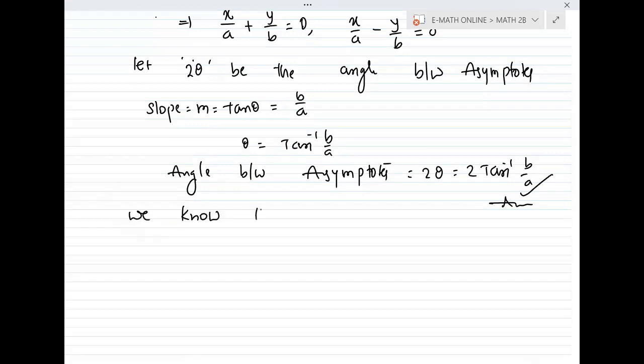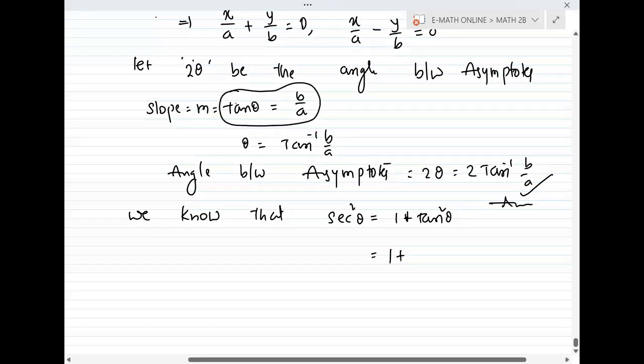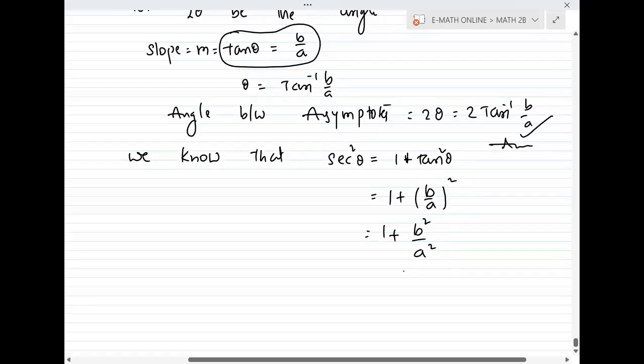We know from trigonometry that secant square θ equals 1 plus tan square θ. That equals 1 plus (b/a) whole square, which equals (a square plus b square)/a square.